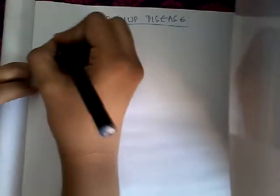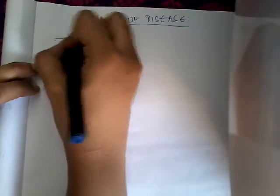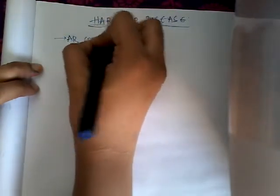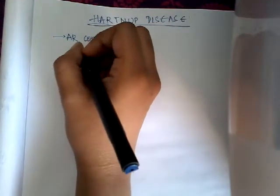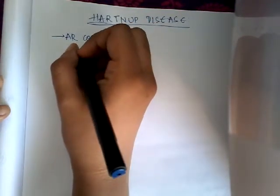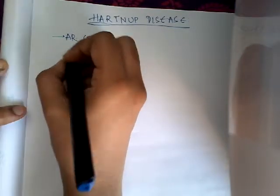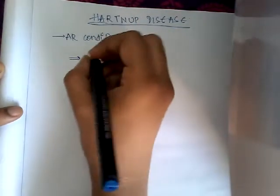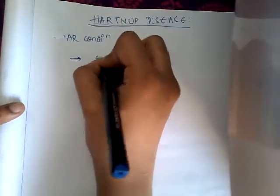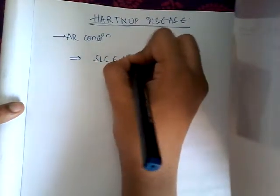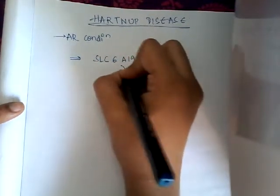Hello friends, let us learn today about Hartnup disease. Hartnup disease is an autosomal recessive condition and it is caused by a defect in absorption or transport of neutral amino acids. The SLC6A19 gene is responsible for it.